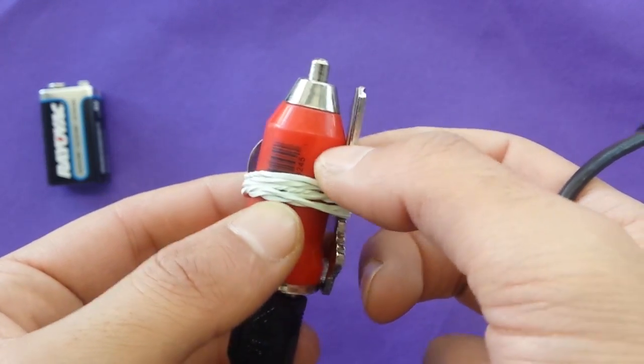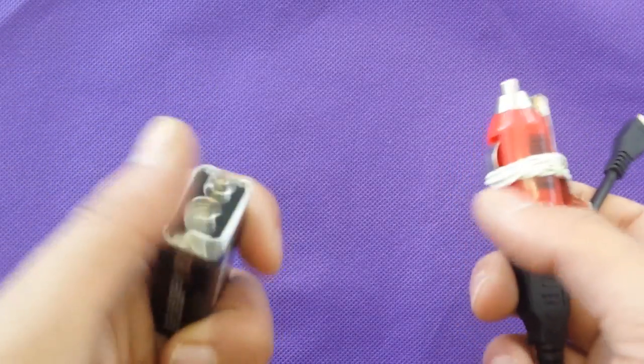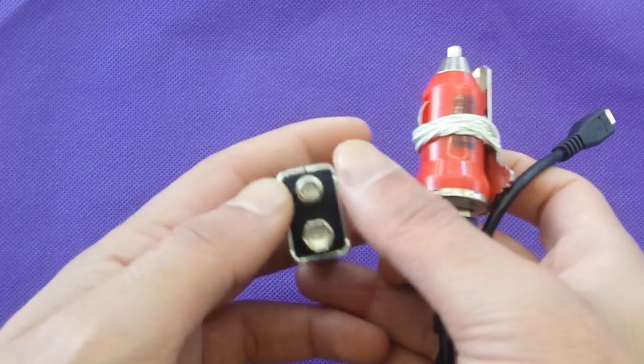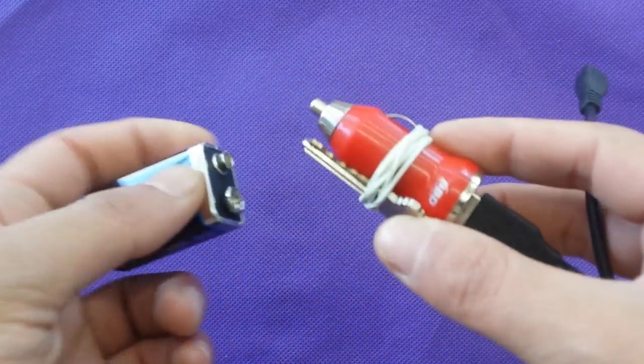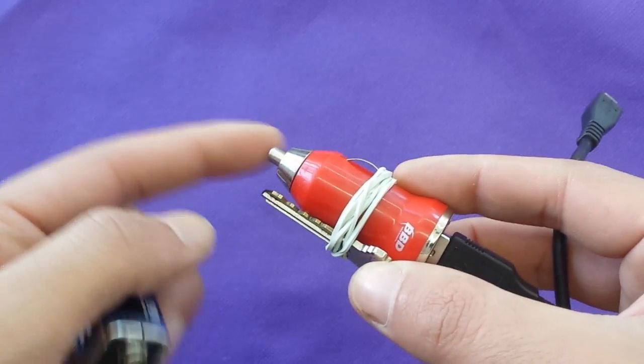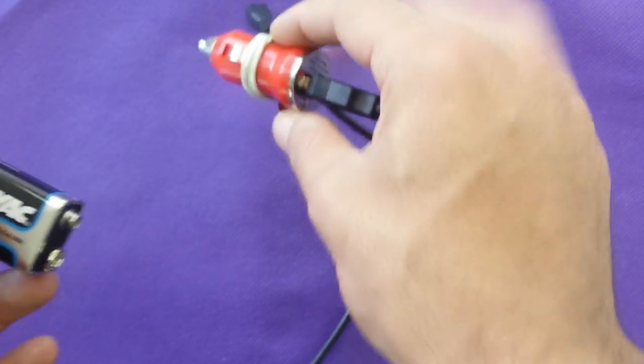I also need to figure out the positive and the negative. Basically, the key has to go to the negative side and the positive goes through the car charger like this one.